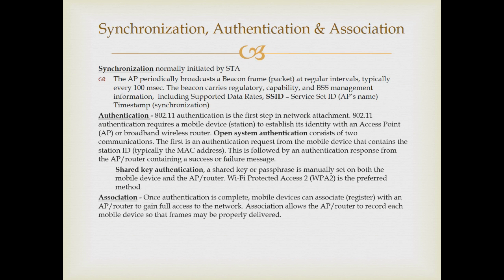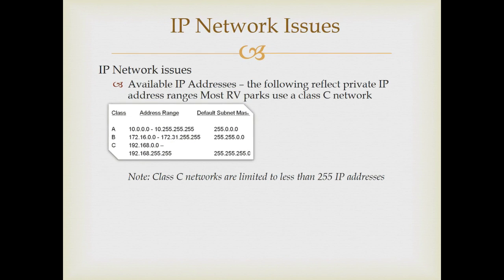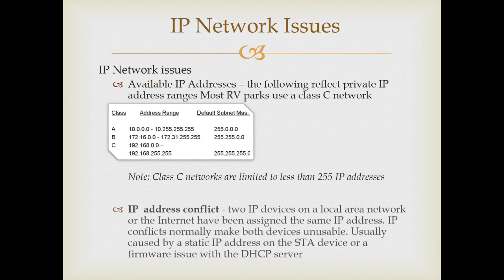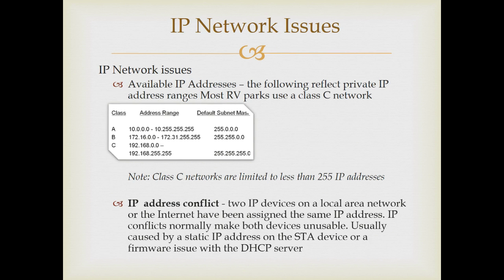One possibility when you can't connect is that there are no IP addresses available for assignment. Most RV parks utilize a Class C network, which means they may have fewer than 255 available addresses. For example, an RV park with 150 sites that allocates 250 IP addresses can quickly exhaust those addresses if some RVers enter the park with two laptops, two cell phones, and a tablet.